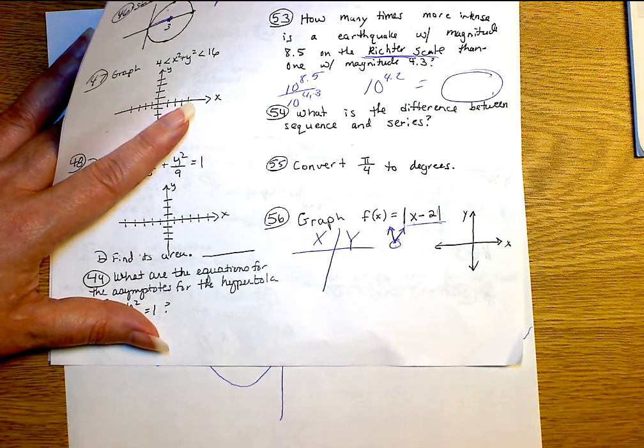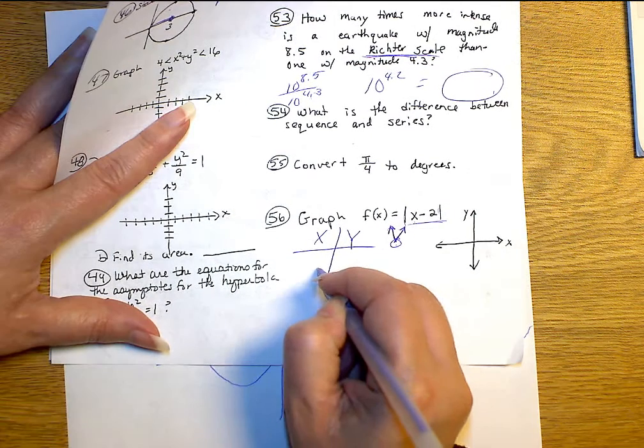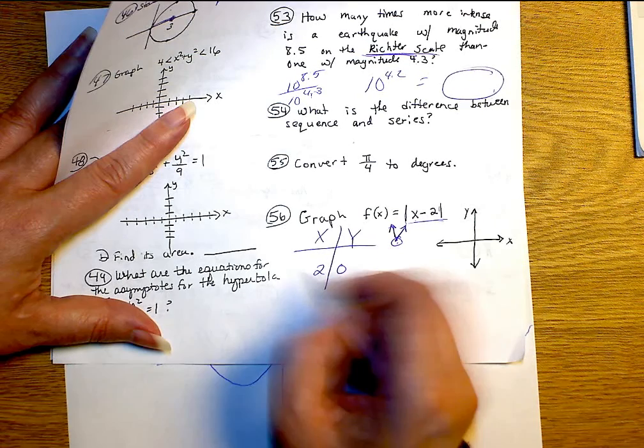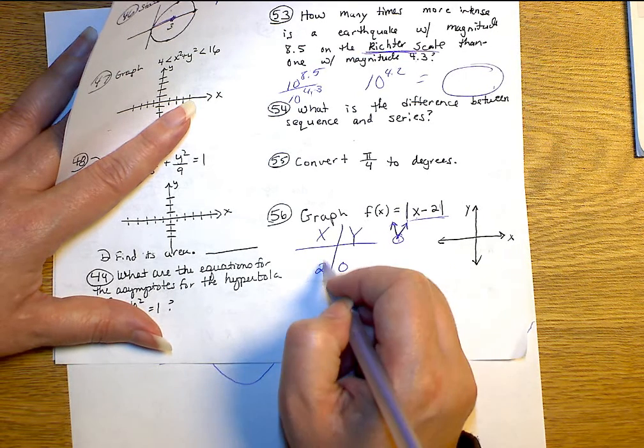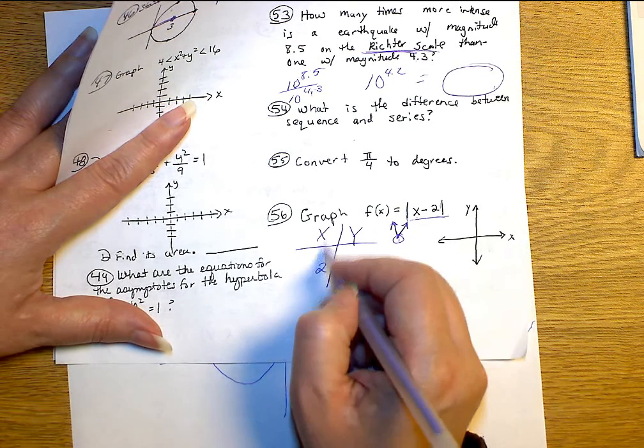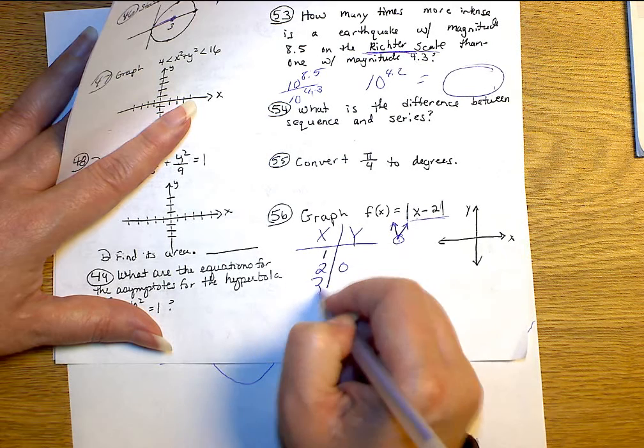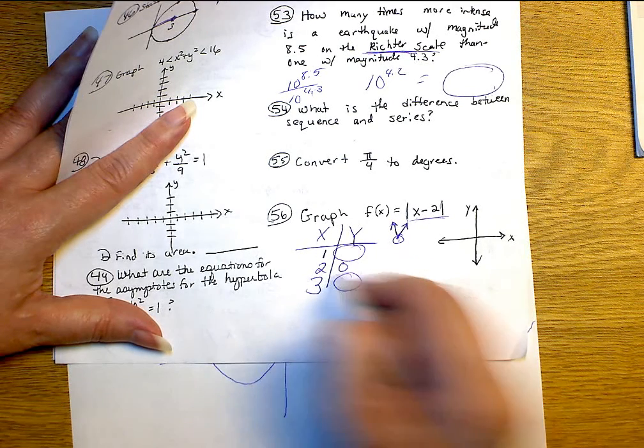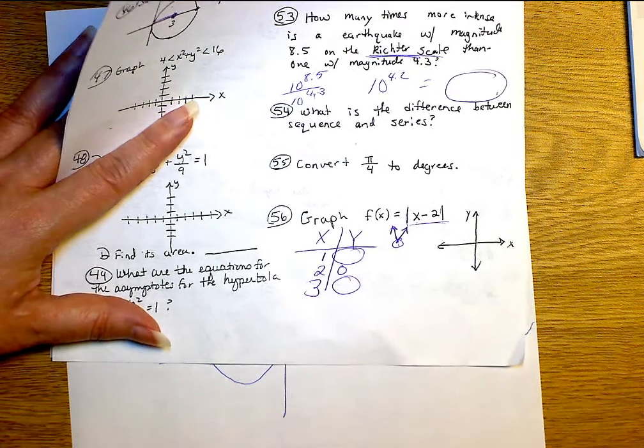2. So the point 2, 0 is my vertex. Then I have to pick a point that's to each side of 2. So I would pick like maybe 1 and 3. And you'd find your Y values and plot those points. And I'm going to leave you to be able to do that.